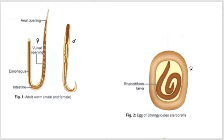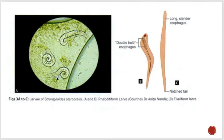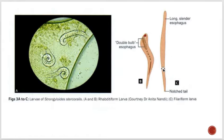There are two larval forms: the rhabditiform larva and the filariform larva. The rhabditiform form is the first-stage larva and is the most common form of parasite found in the feces — when we check stools of a patient, we find this form. It is around 0.25 millimeters long. The filariform larva is longer than the rhabditiform larva.